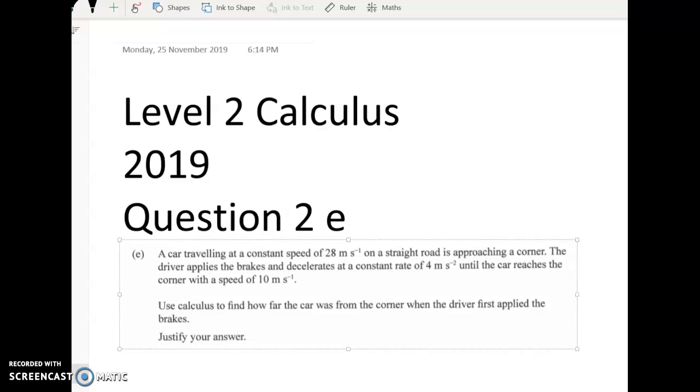So it's not too bad. We've got a car that's traveling at a constant speed of 28 meters per second on a straight road, and it's coming up to a corner. So the driver applies the brakes and decelerates at a constant rate of 4 meters per second squared until the car reaches the corner with a speed of 10 meters per second. Use calculus to figure out how far the car was from the corner when the driver first applied the brakes, and justify your answer.